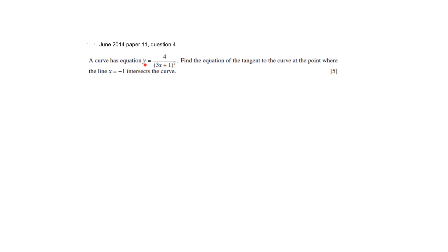In this question a curve has equation y equals 4 over (3x+1) squared. You need to find the equation of the tangent to the curve at the point where the line x equals negative 1 intersects the curve. So the line x equals negative 1 intersects the curve at point P and you are being asked to find the equation of the tangent at this point.